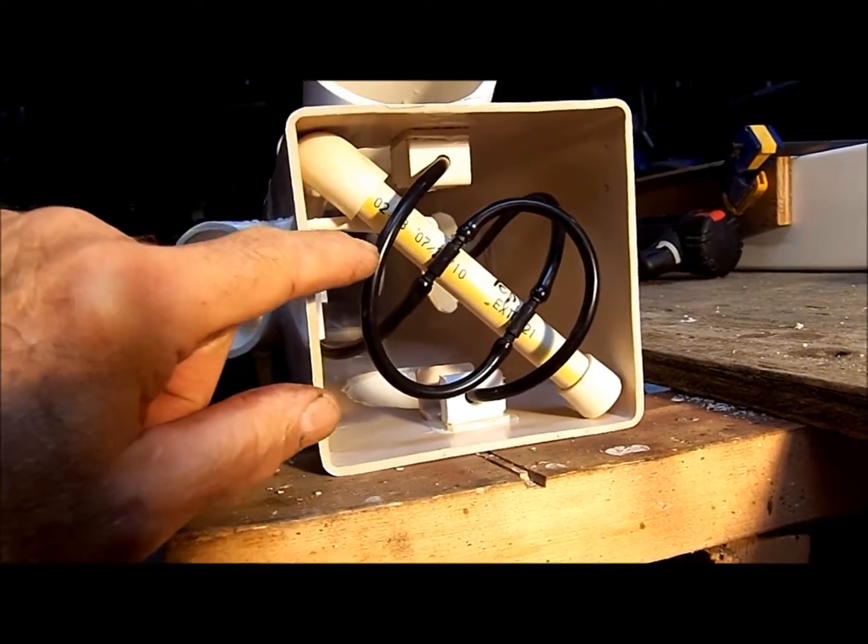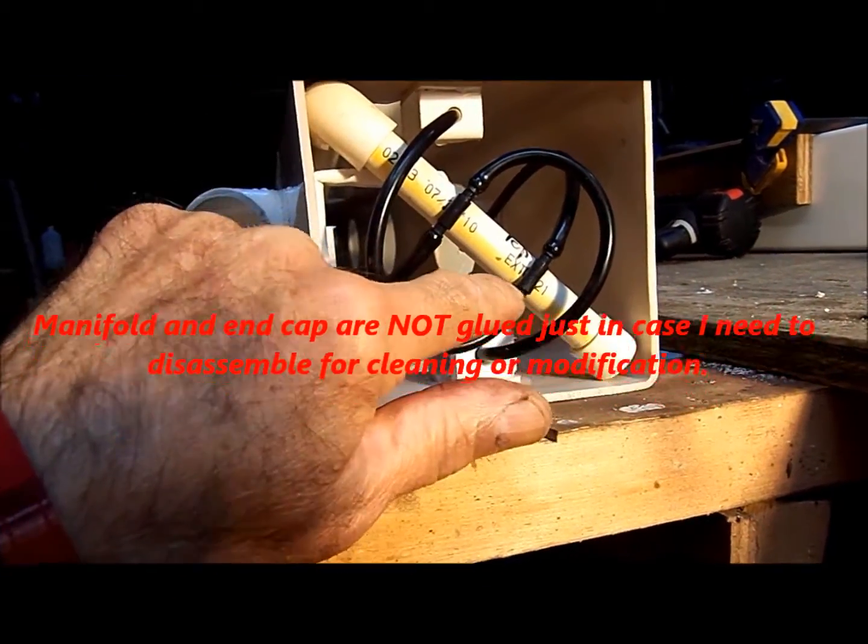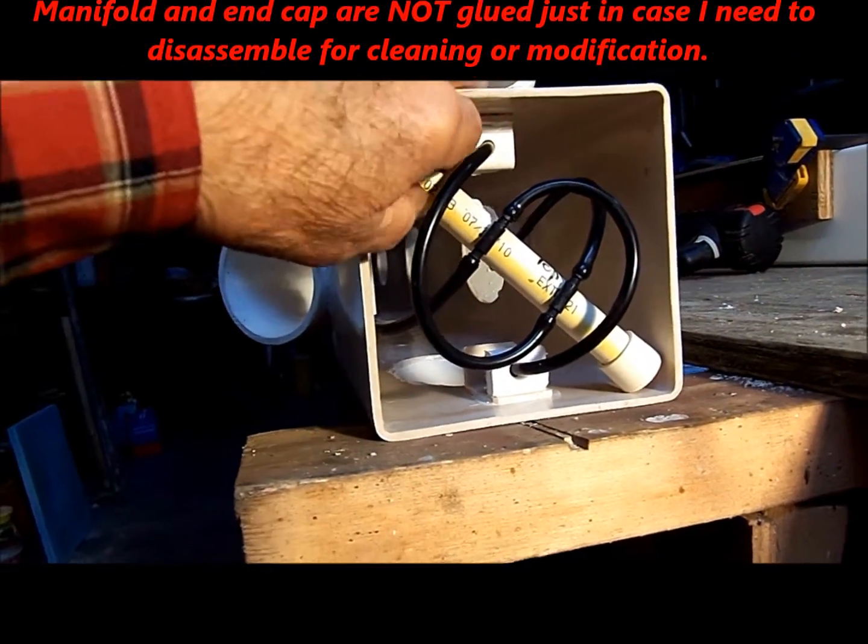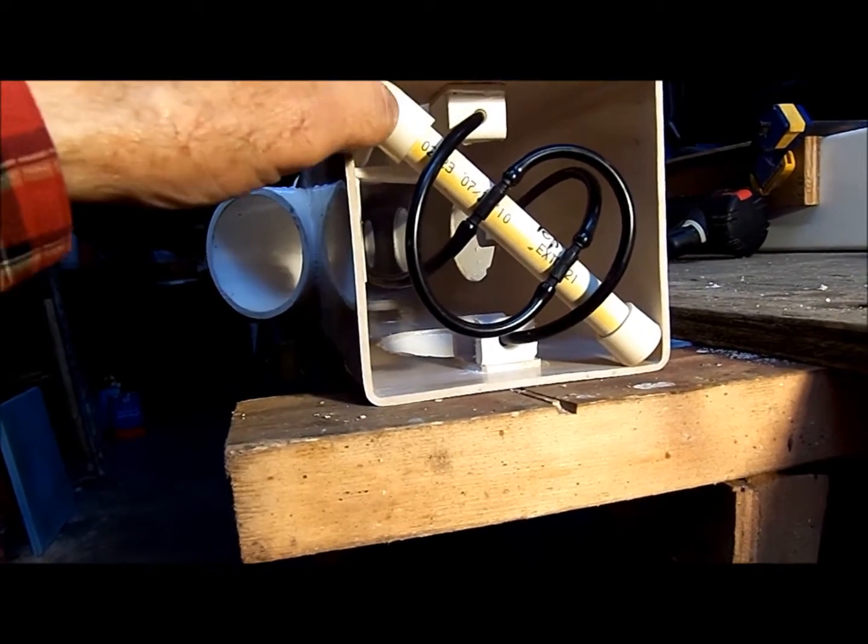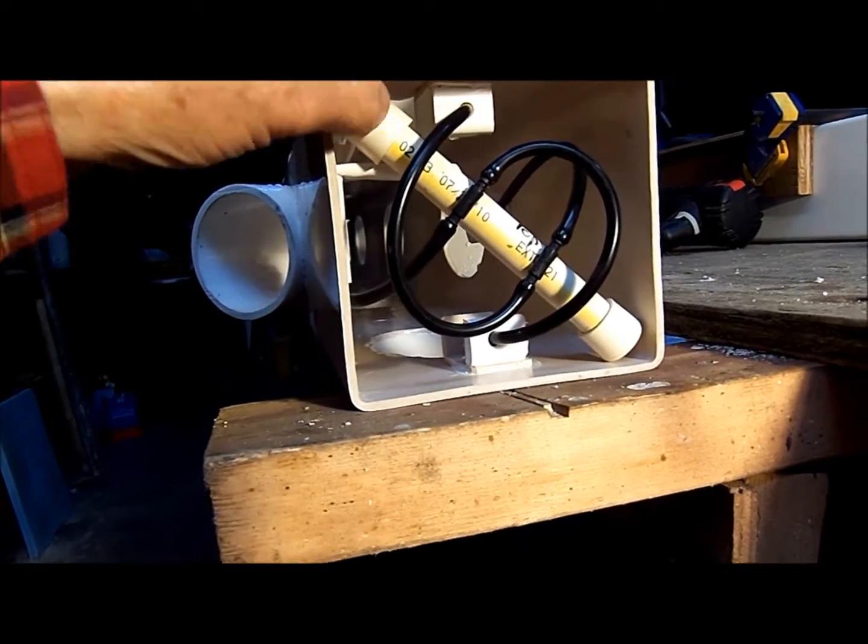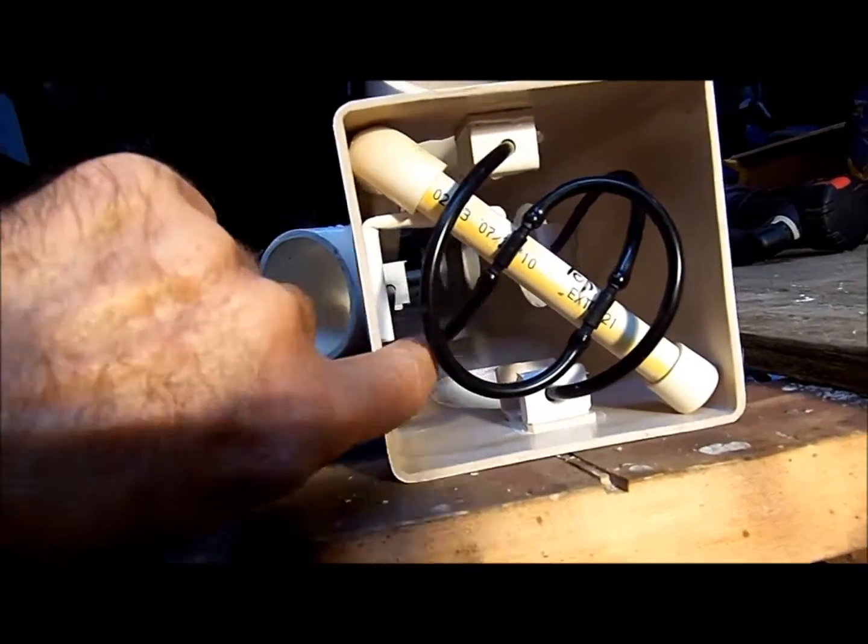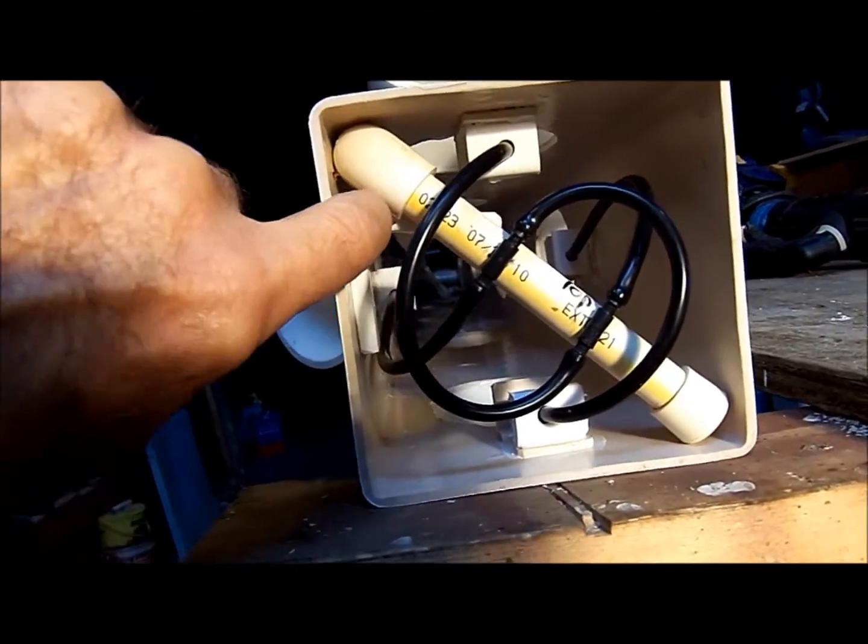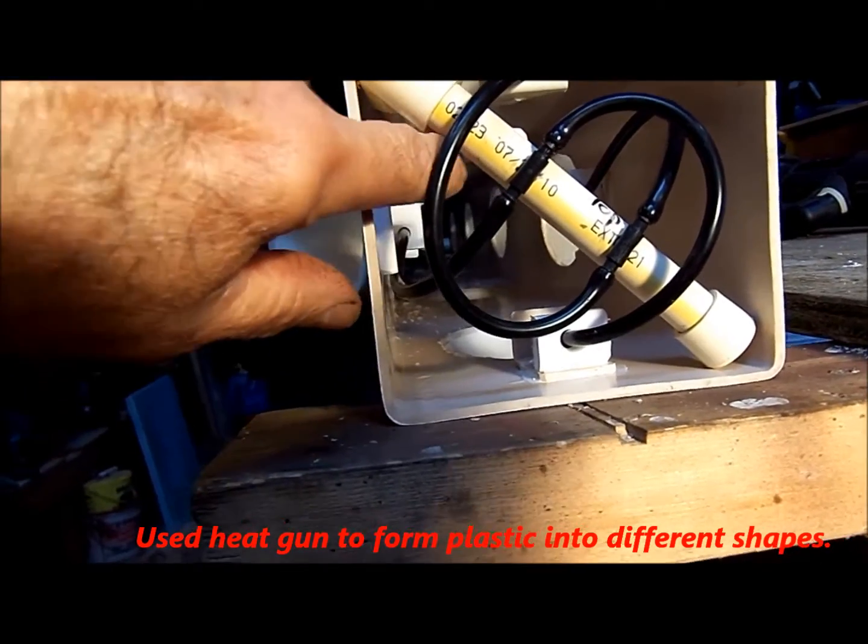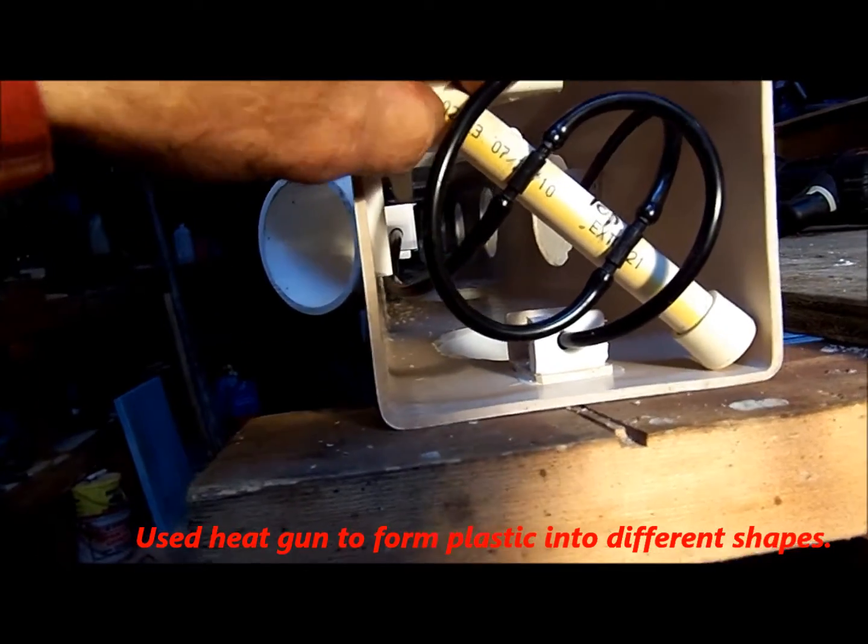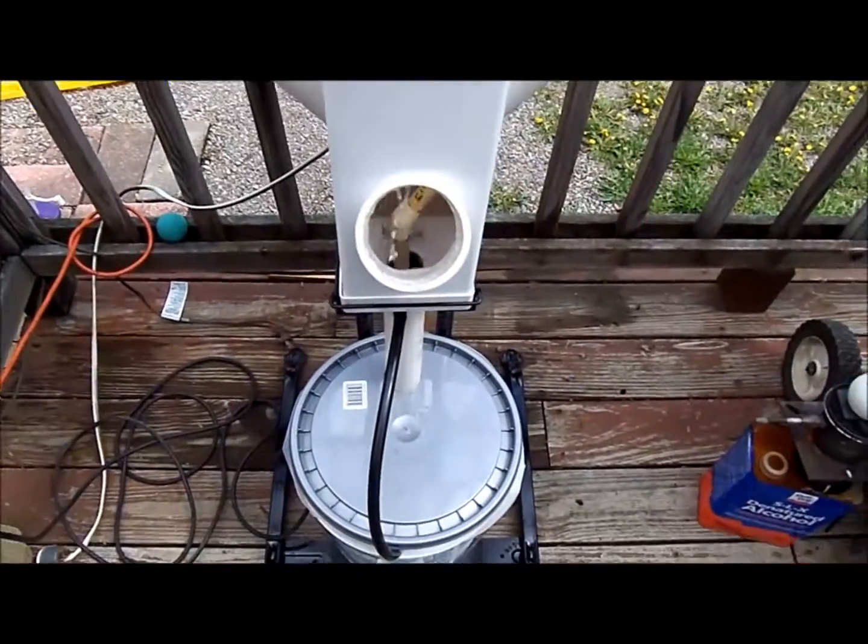Now if I need to I can disconnect these hoses. I can just pull this pipe here. And I can withdraw the whole feed system right out of the tube if I need to do any maintenance or anything like that. I made a little bracket out of what was left over from the holes. I just cut it and I glued it there as a support for that feed pipe.